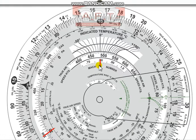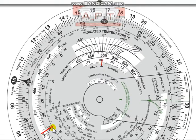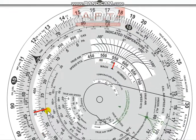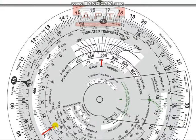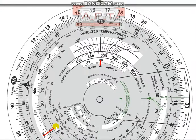That result only applies for that particular CAS and level combination. If I stay at 30,000 feet but increase CAS to 350 knots, with more CAS I'll have more Mach — that reads over 0.9, about 0.91. Compared to 300 knots at 30,000 feet which was just under 0.8 at 0.79.